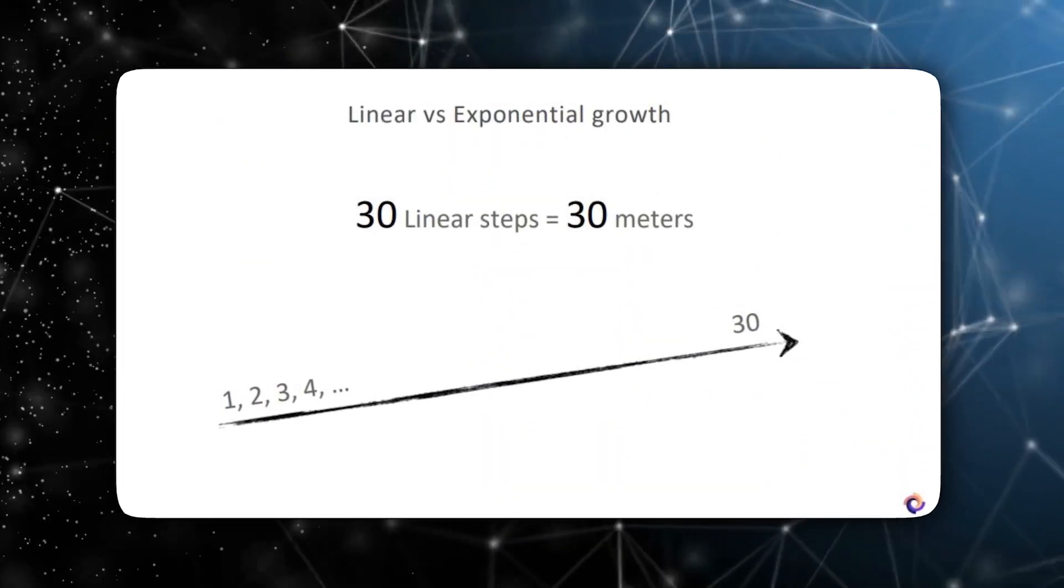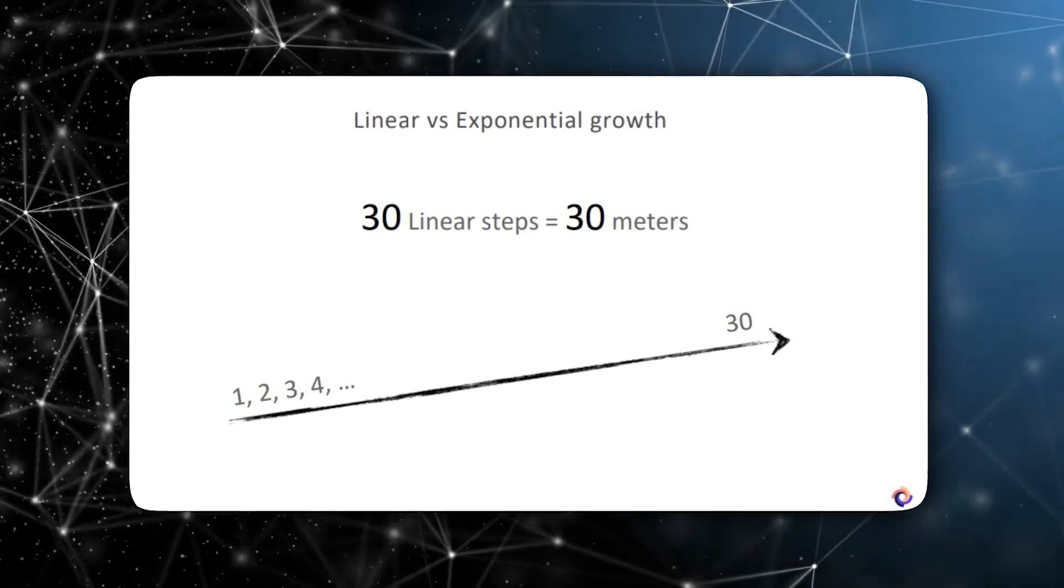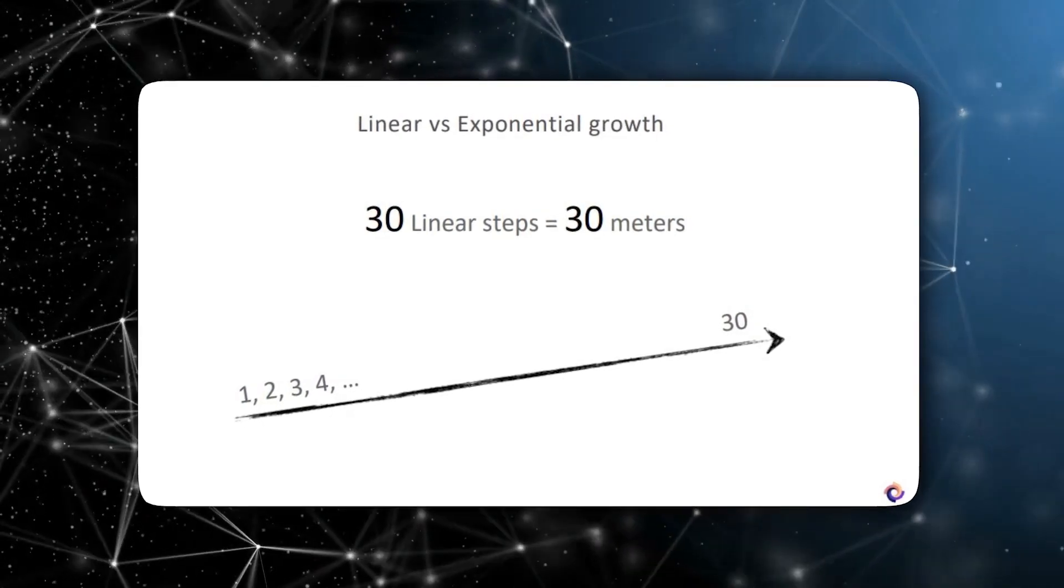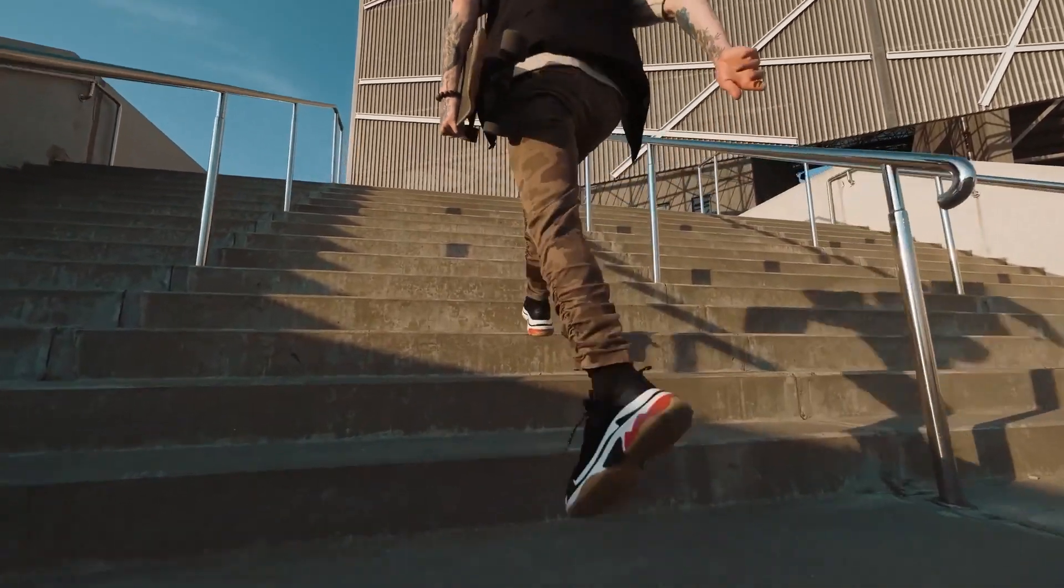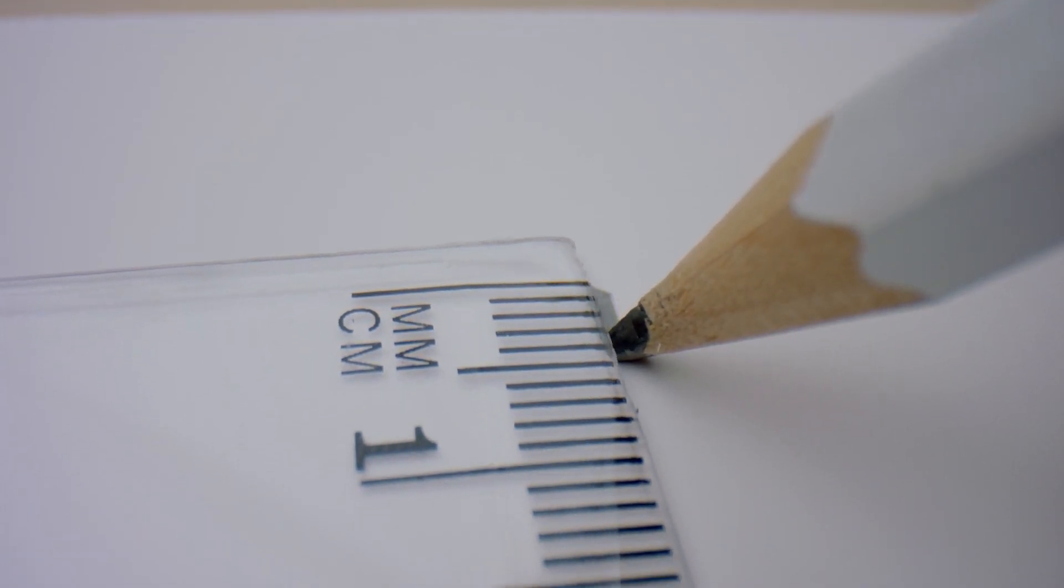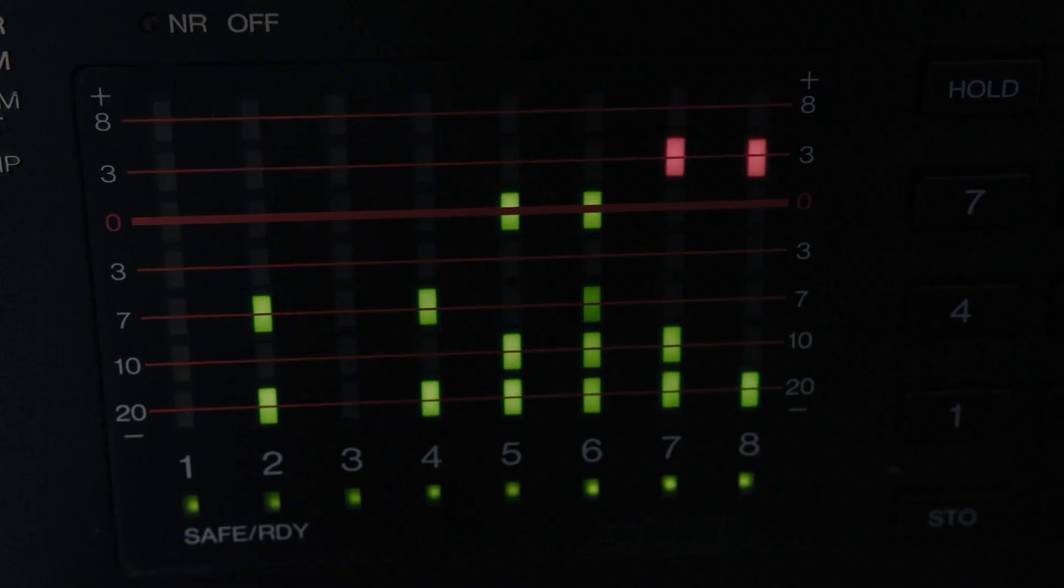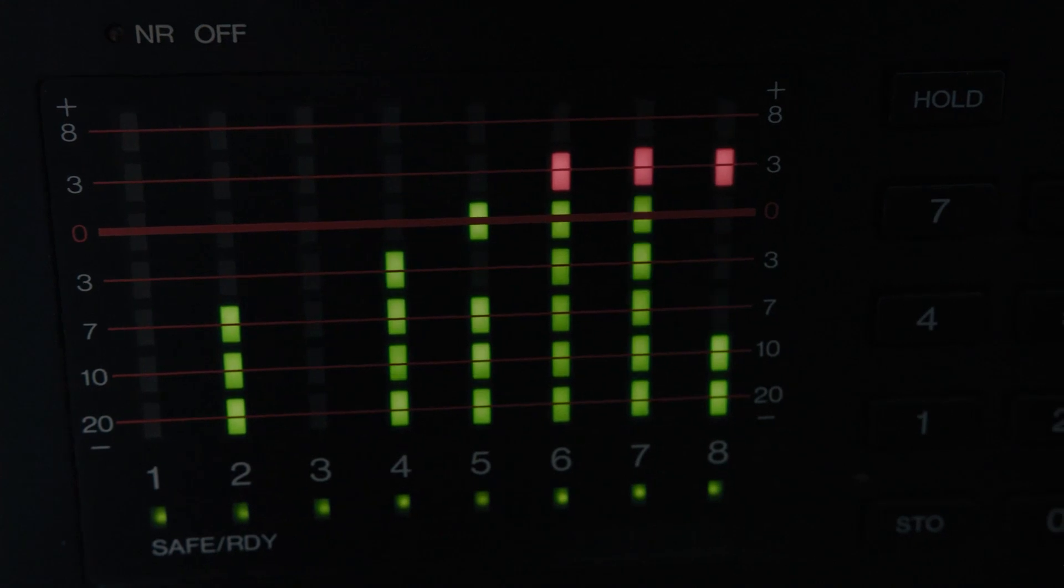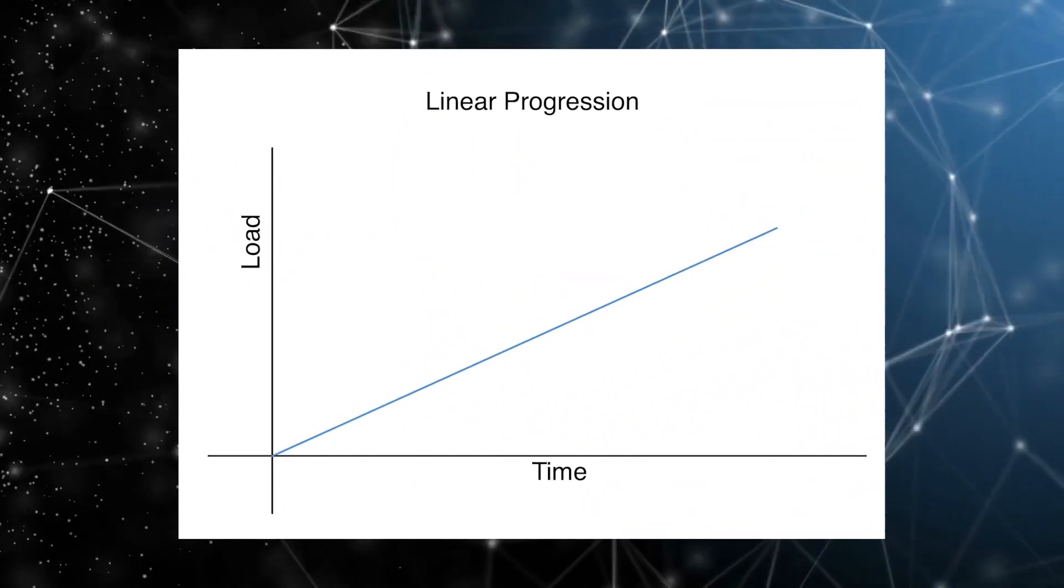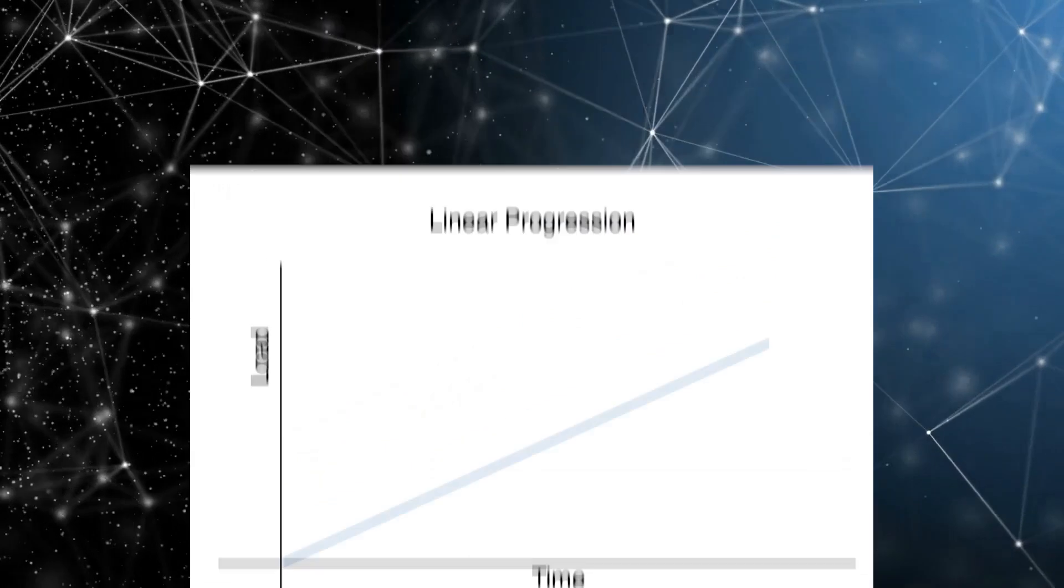Let me show how. If I ask you now to stand up and go 30 steps, you know pretty much where you're going to be at any point of the journey. At the end, you will be 30 meters in the direction you choose and you can estimate very well where you will be at any given point of the journey. You can estimate where halfway will be, where two-thirds is, etc. Linear progression is quite easy to understand and is predictable.